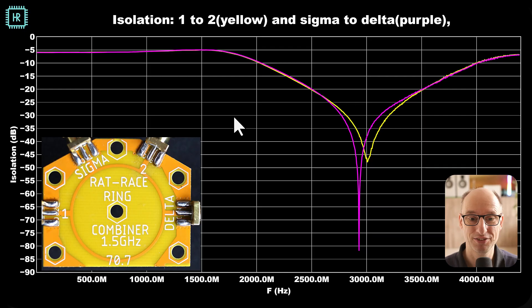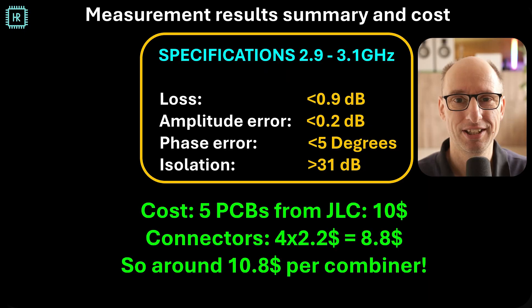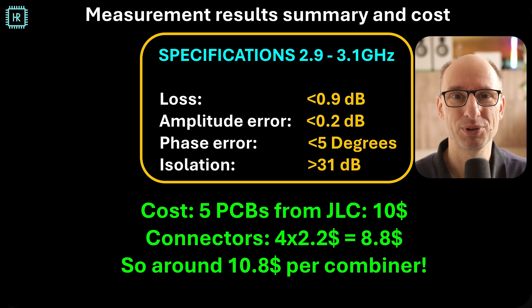So this thing behaves actually very nicely. So let's summarize the results and look at the cost of this thing. The loss is smaller than 0.9 decibels, the amplitude error is smaller than 0.2 decibels, the phase error is smaller than 5 degrees, and the isolation is better than 31 decibels. Let's have a look at cost. Five PCBs from JLC are $10. Connectors are $2.20.